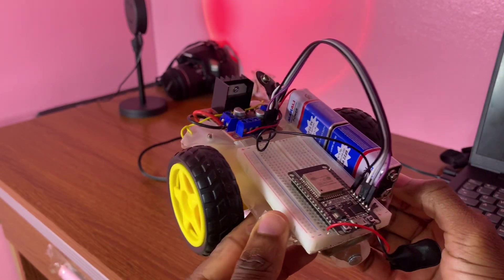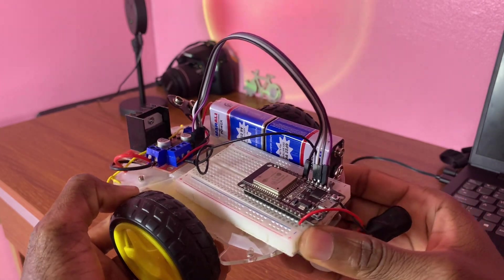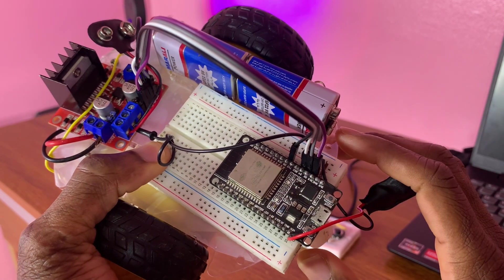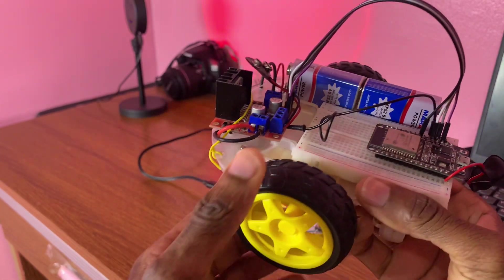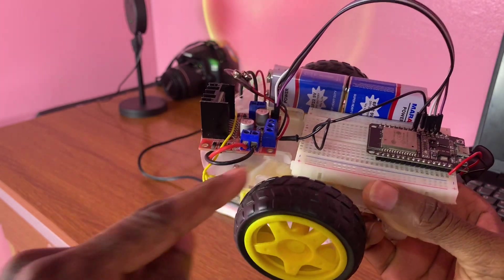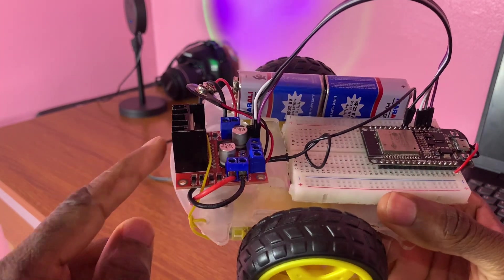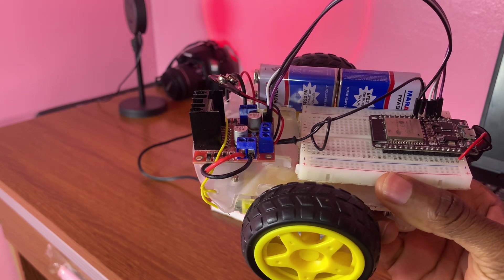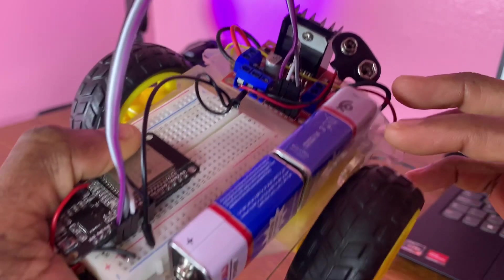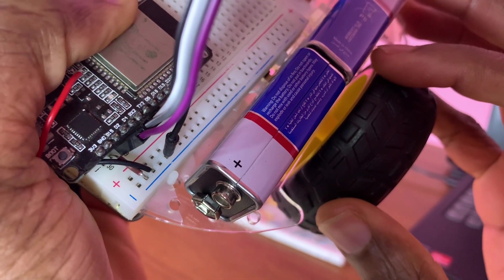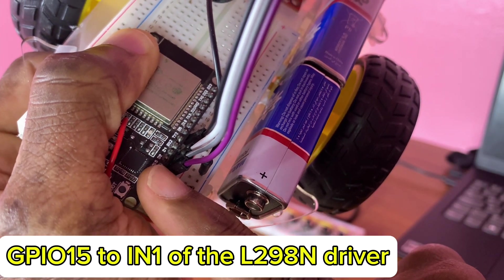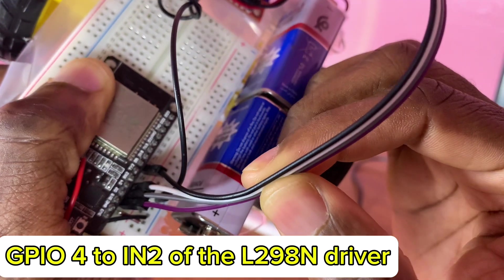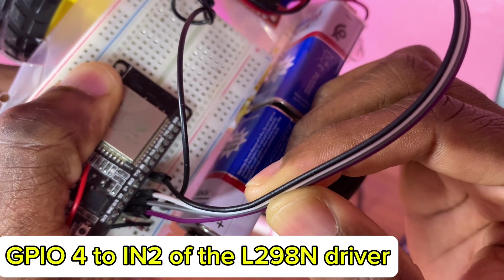So here with the receiver, the ESP32 on this side, and on this side of the robot with the L298 driver. So input 1 (IN1) is attached to GPIO 15. Pin 2 is attached to GPIO 4.